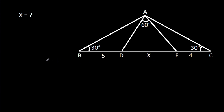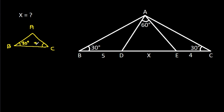In triangle ABC — points A, B, C — these two angles are equal, that is 30 degrees. That means AB will be equal to AC.